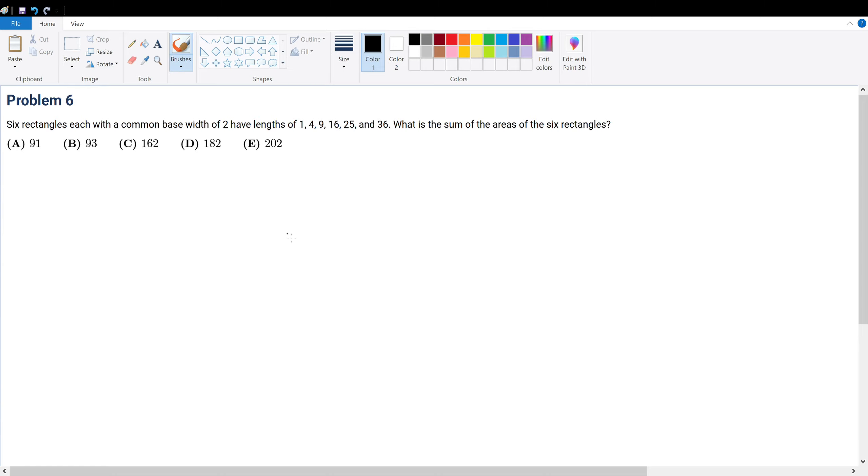Problem six. Six rectangles with a common base width of two have lengths 1, 4, 9, 16, 25, and 36. What is the sum of the areas of the six rectangles?